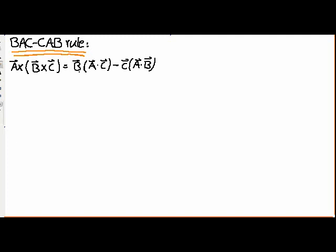B is a vector so it has three components: B_x, B_y, B_z. Similarly we have C_x, C_y, C_z. On the left side, A cross (B cross C) is also a vector with three components. I'm going to obtain the X component of the left side and show it equals the X component of the right side, then repeat for Y and Z.